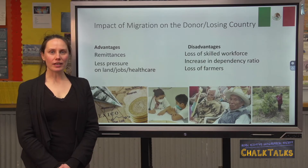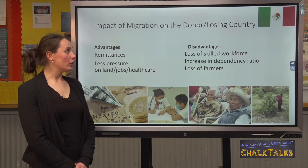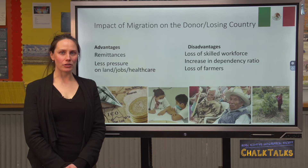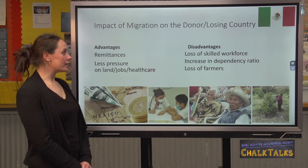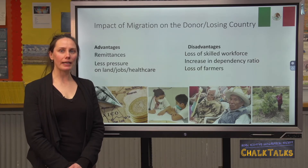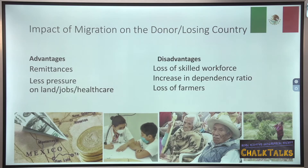You also need to discuss the impact of migration on the donor or losing country — in this case Mexico. The money sent back to Mexico by migrants is helping its economy greatly, as people now have money to spend on goods and services. It's estimated that remittances make up 2% of Mexico's GDP. As people move out of Mexico, pressure on land, health services and jobs is being relieved.